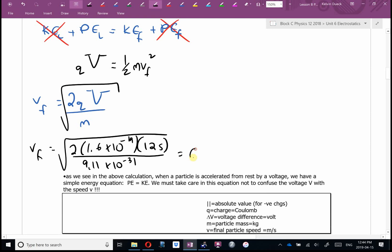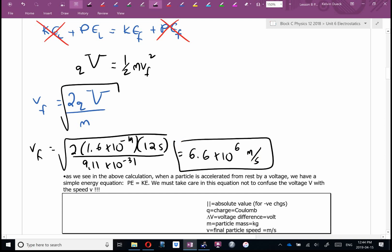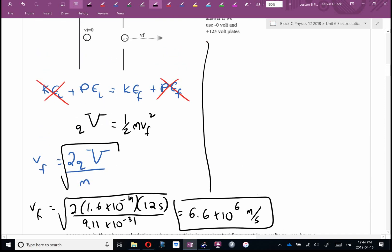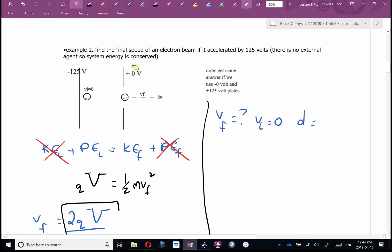You're going to get something in the 10 to the 6th range, maybe 10 to the 7th. For what it's worth, you could also have done this: VF equals question mark. What's VI? What's the distance? They didn't give me this distance. There's going to be one later on where I can actually put D equals and solve for A using F equals MA, and then go VF squared equals VI squared plus 2AD, and you'll get the same answer. So as we see above, we get this equation: QV equals 1/2 MV squared.